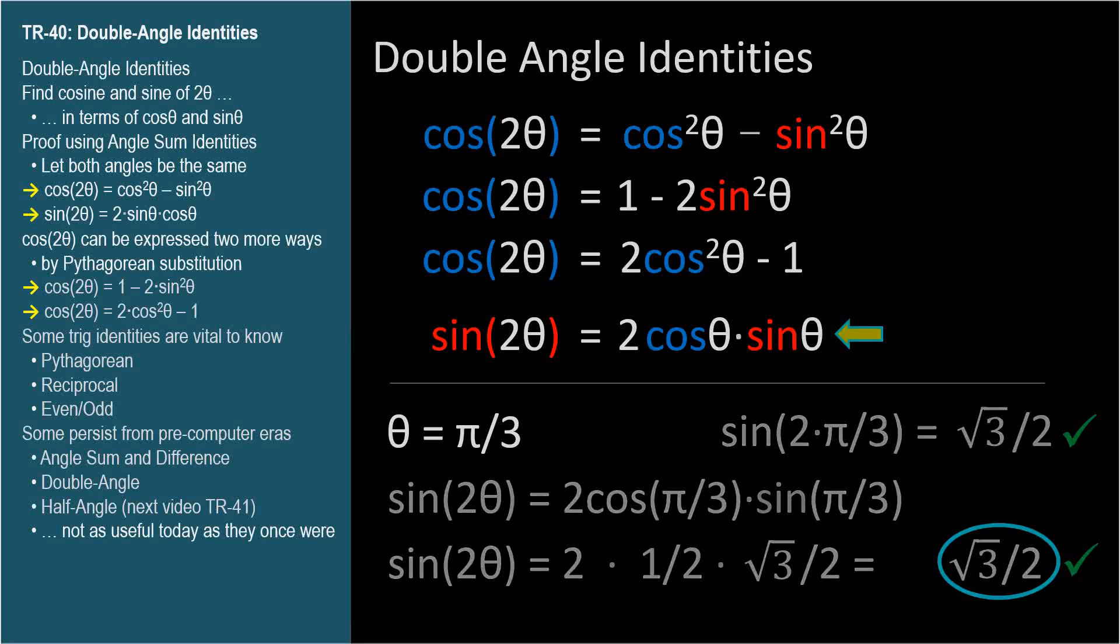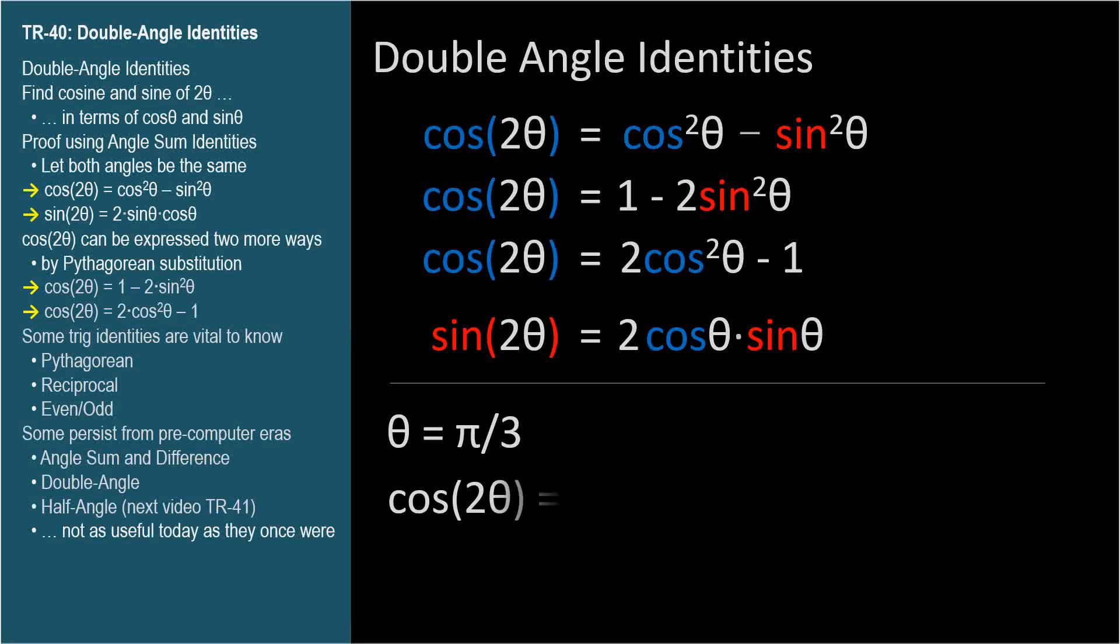For the sake of completeness, let's find cosine 2θ using the other versions of the identity. Of course, we expect the same answer, negative 1 half.